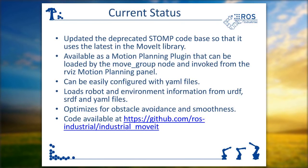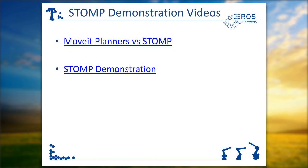Currently, STOMP only optimizes for obstacle avoidance and smoothness, but as mentioned, there is a possibility of adding extra objectives to be taken into account in generating the motion plan. The link to the source code is available under ROS-Industrial.